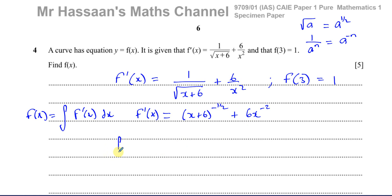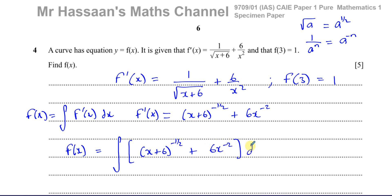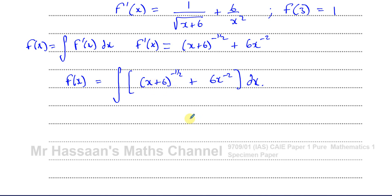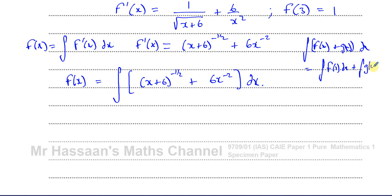Now we can integrate. I'm going to integrate (x+6) to the power of negative a half plus 6x to the power of minus two with respect to x. When you're integrating a collection of terms like this, you can integrate each of them separately — the integral of f(x) plus g(x) is the same as integrating them separately and adding the results together.